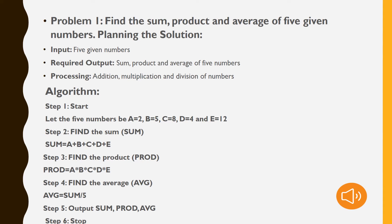You have to take five given numbers and calculate their sum, product, and average. To plan the solution, you have three major headings. First, mention what your input is — as stated in the problem, the input is five given numbers. The required output is: find the sum, find the product, and find the average of five given numbers. For processing, you decide the calculations: addition for sum, multiplication for product, and division for average.